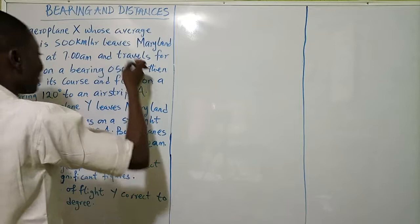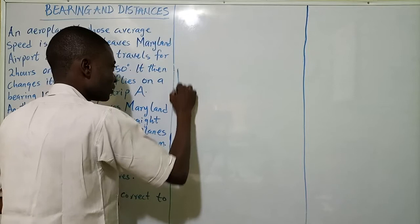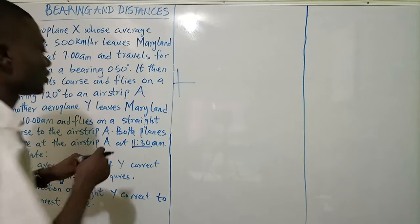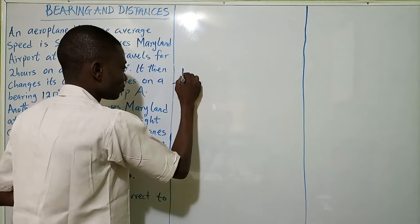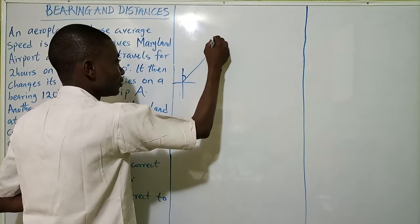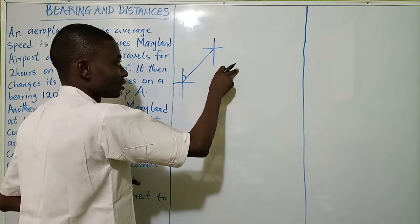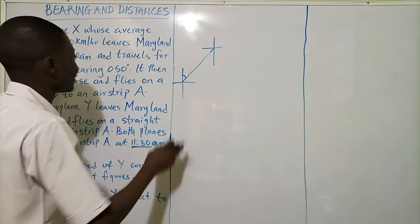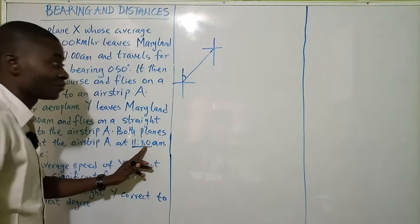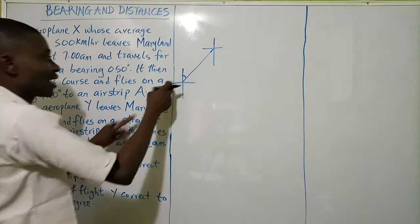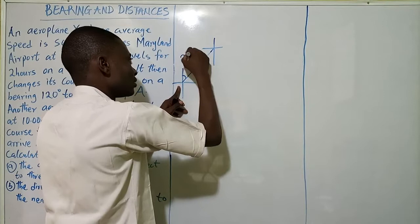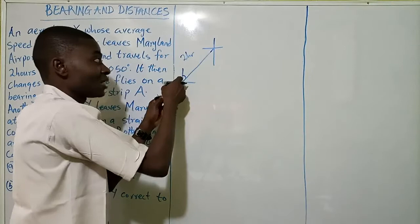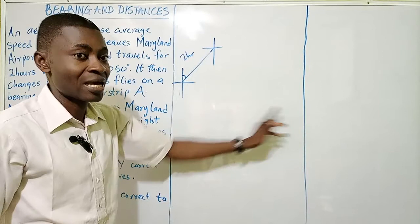Let's start. Let's say this is Maryland airport here. The plane starts at a bearing of 050 degrees, so from Maryland airport we draw a line on bearing 050. It gets to a point and changes course to head to airstrip A. Now, this airplane started at 7 am and arrived at airstrip A at 11:30 am. But after two hours from the starting point it changed course, meaning around 9 o'clock is when the plane changed its course toward the airstrip.